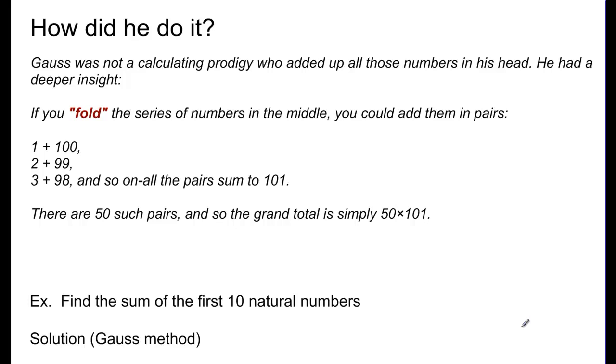He said, if you fold the series of numbers in the middle, you could then add pairs of numbers together. So, he would take 1 and then add it to 100, because 1 was the first number, but 100 was the last number. And then he would take 2 and add it to 99, and 3 and add it to 98. And if you notice, all of those pairs of numbers equal 101.